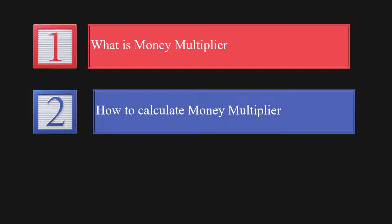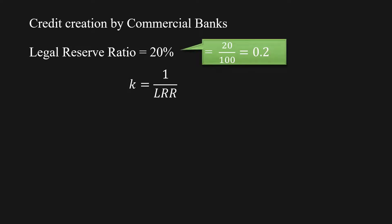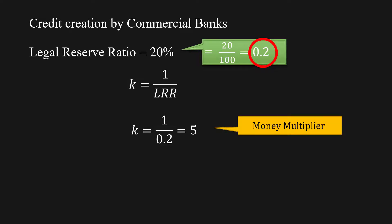How to calculate Money Multiplier. In our lesson Credit Creation by Commercial Banks, we assumed the Legal Reserve Ratio as 20%. Let us substitute the value of Legal Reserve Ratio in the Money Multiplier formula K = 1 / LRR. LRR is 20%, which can also be written as 20/100 or 0.2. So, K = 1 / 0.2 = 5. Money Multiplier is 5.